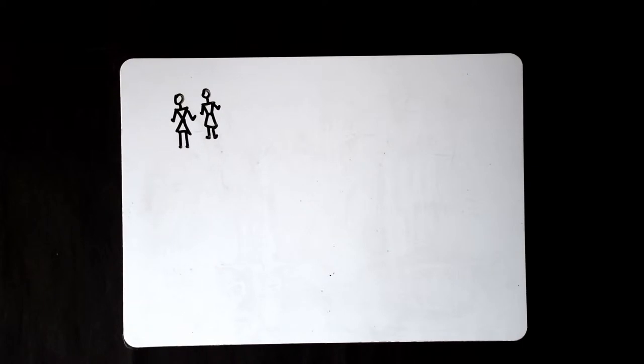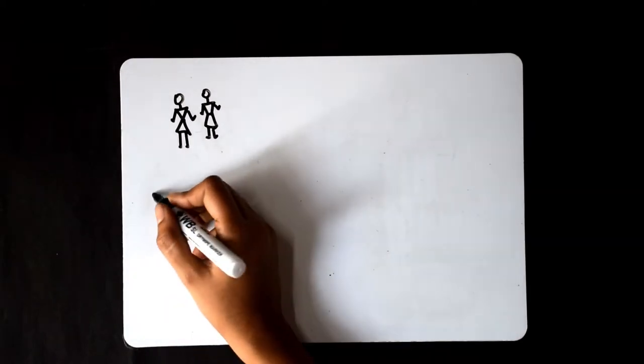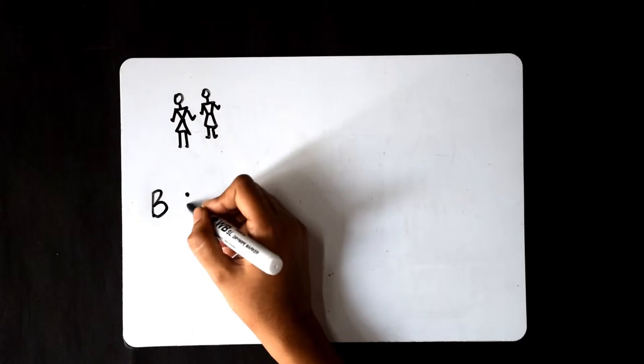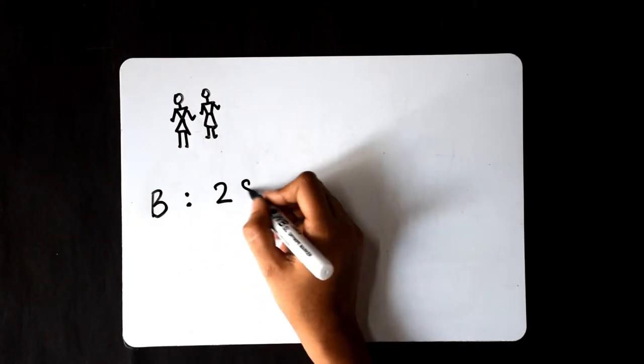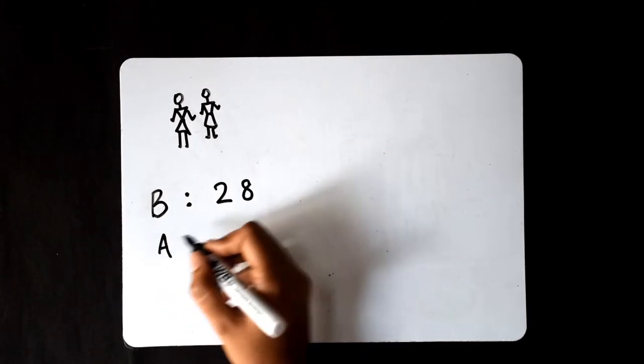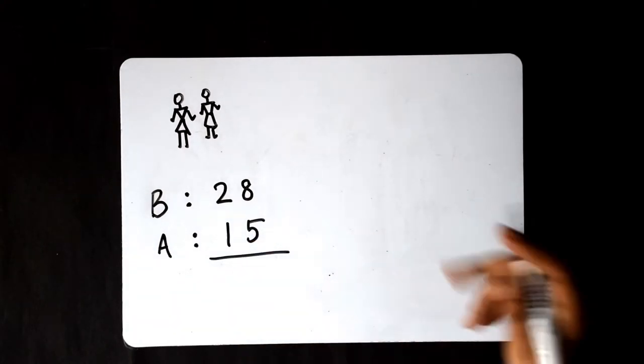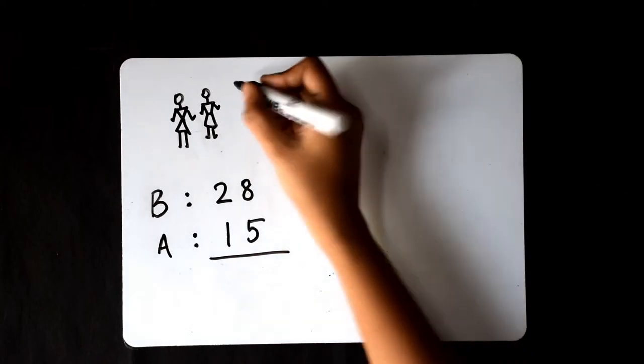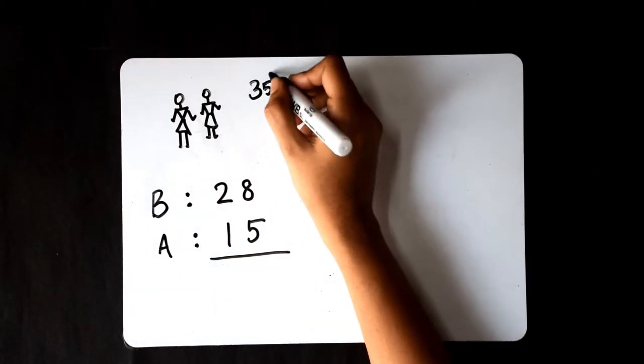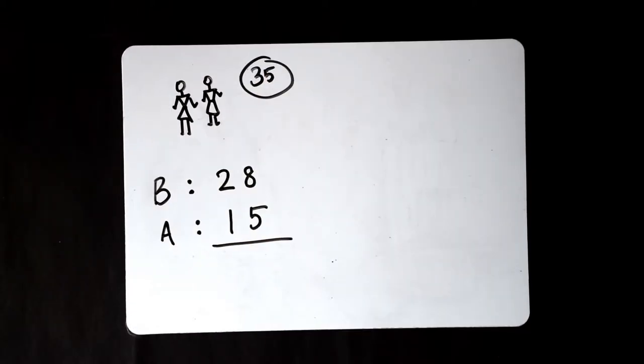There are two friends, Barchi and Anjana. Barchi has 28 rupees and Anjana has 15 rupees. Now, both of them want to know how much money they have in total. They think that they have 35 rupees but they are not sure. So, shall we help them? Let's start.